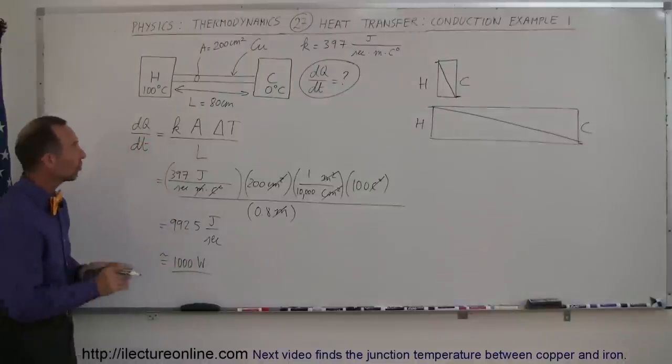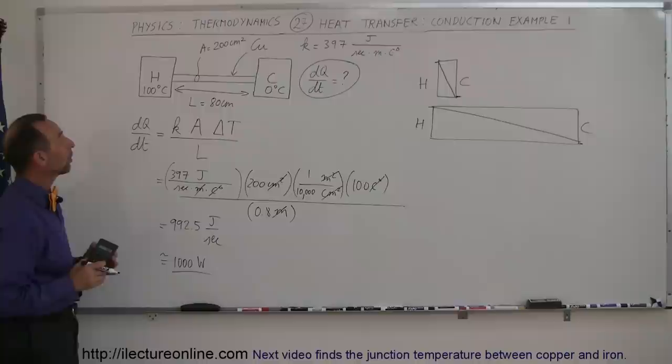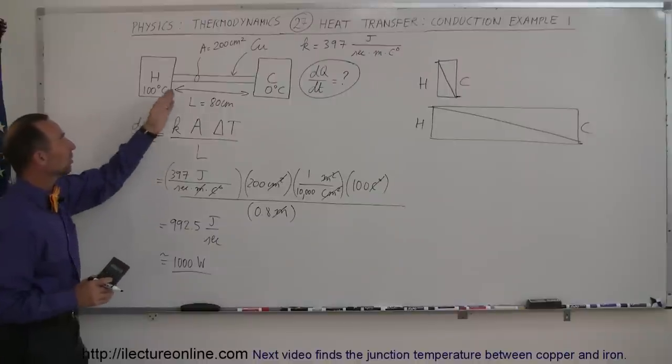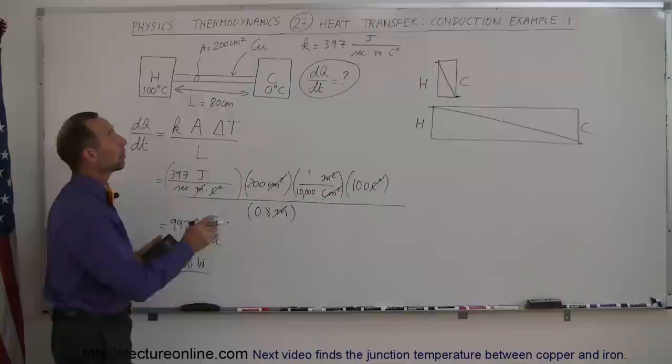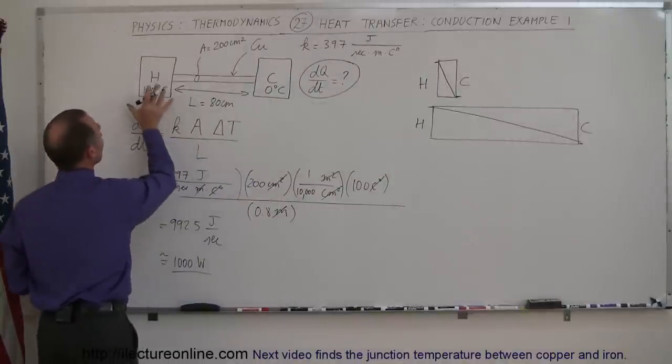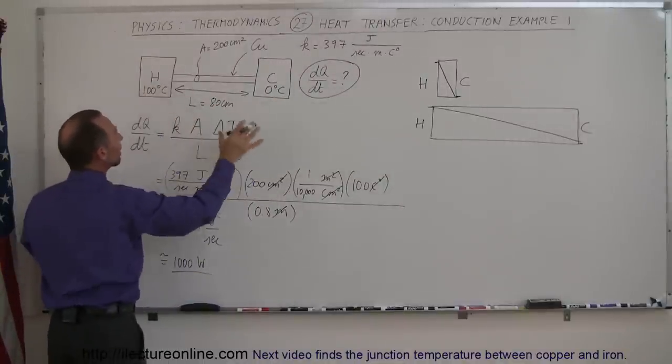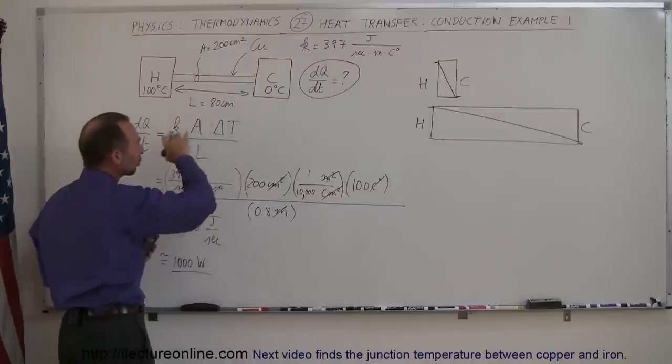And so we can then convert that to about 1,000 watts. So almost 1,000 joules per second will travel along that copper bar if one side is kept at 100 degrees centigrade, and the other side is kept at 0 degrees centigrade. Of course, to do that, we probably want to pack this in an ice bath, and we probably want to pack this in boiling water to keep that temperature constant so that the heat transfer will be constant, like that.